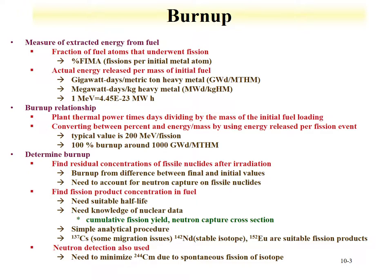Burn-up can be determined through calculations or measurements. One approach is to find the residual concentration of fissile nuclides after irradiation — if you know how much uranium-235 was in the fuel initially and measure the amount remaining, you can determine burn-up. However, you would also have to account for neutron capture on uranium-235, so you'd need to look at the amount of uranium-236 also present, since some uranium-235 fissioned and some underwent neutron capture. If you know the neutron energy and cross-sections, you can use cross-section ratios between fission and capture to calculate that amount.